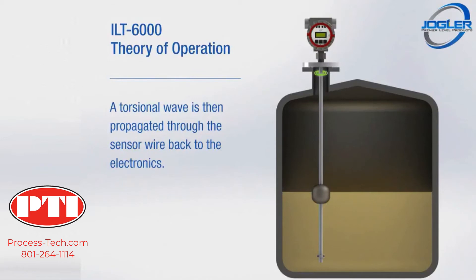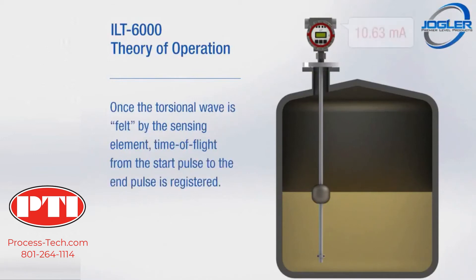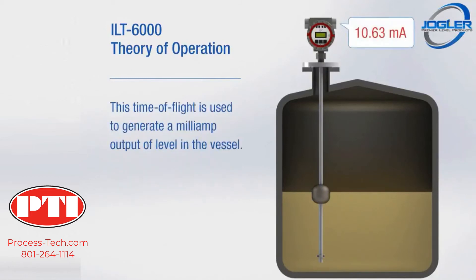Once the torsional wave is felt by the sensing element, time of flight from the start pulse to the end pulse is registered. This time of flight is used to generate a milliamp output of level in the vessel.